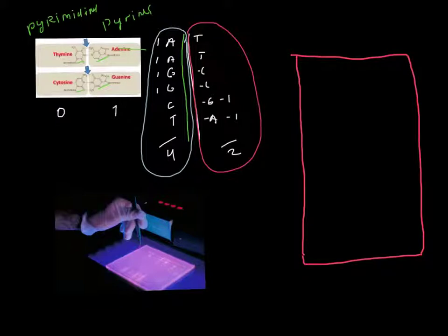When we run a gel, we prepare one well where we load our two separated strands, and depending on the molecular weight, they would go in the direction of the plus charge. Here we apply minus charge. When we apply a current, our two strands would separate depending on the molecular weight.